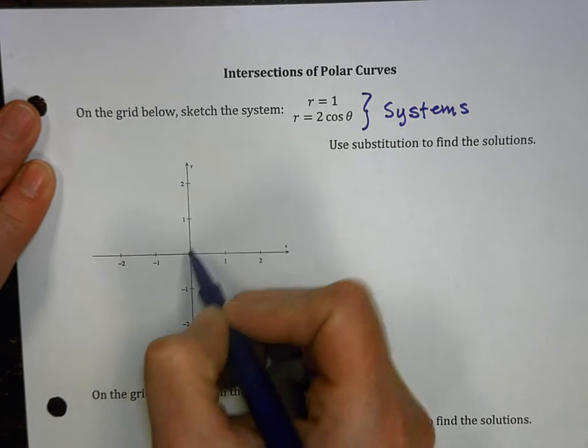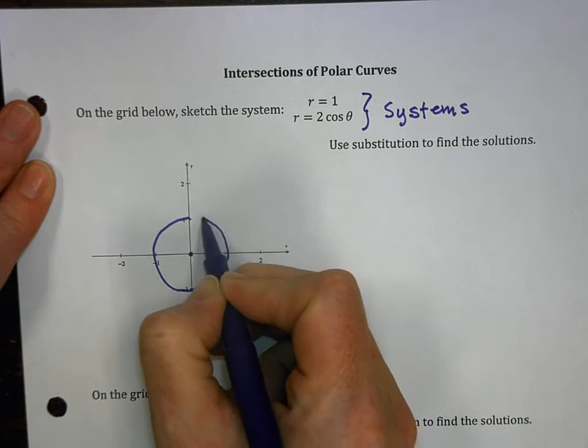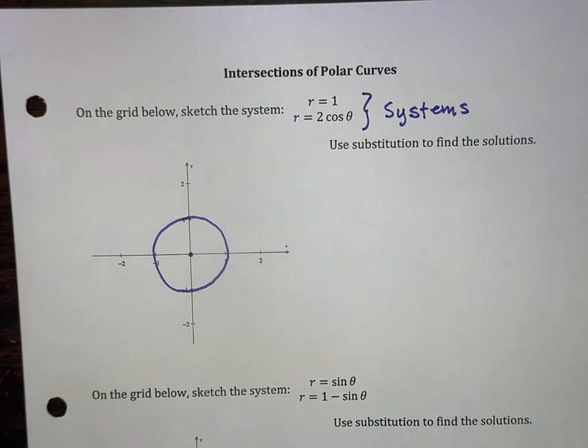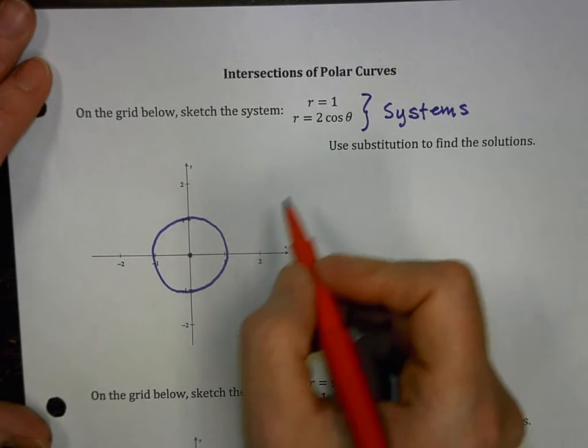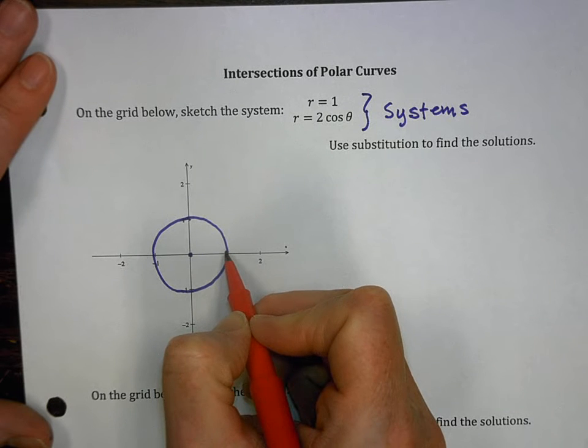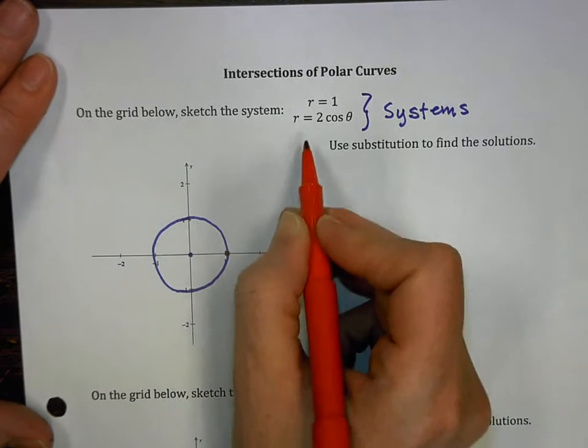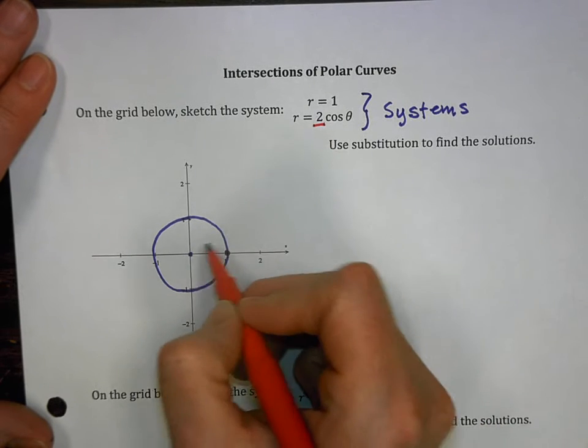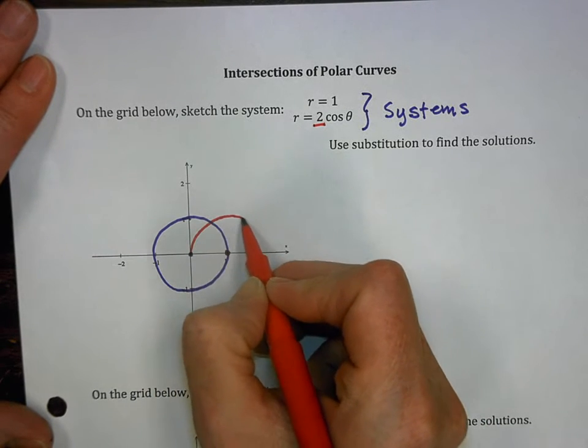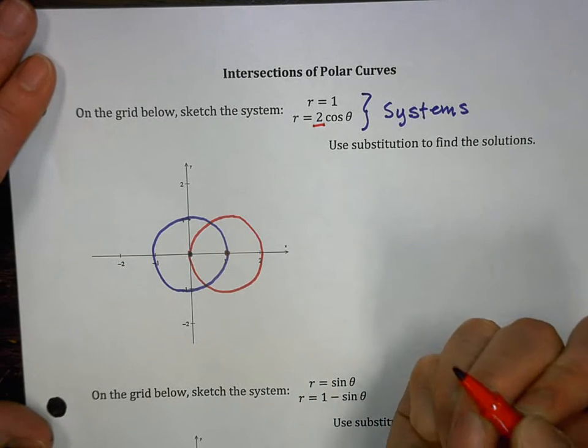R equals one, a circle with the center at the origin with a radius of one. There you go. So let's do the second equation. That's another circle, but it's on the x-axis. It's got a center right here because a is two, so that's the diameter. Here we go. This is the second graph.